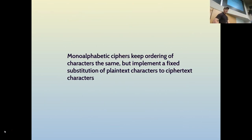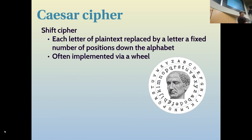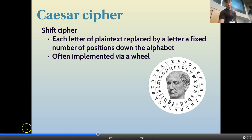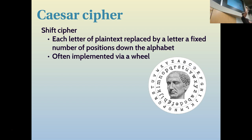The next set of ciphers are the monoalphabetic ciphers. With these ciphers, the ordering is kept the same, but you do a simple substitution of a plain text character to a ciphertext character. The simplest monoalphabetic cipher is the Caesar cipher, used by Julius Caesar to encrypt his messages. The key part is a wheel — the inner part can be rotated. Based on your rotation, you translate the plain text character on the outer ring to the ciphertext character on the inner ring. The key is the position of your wheel.